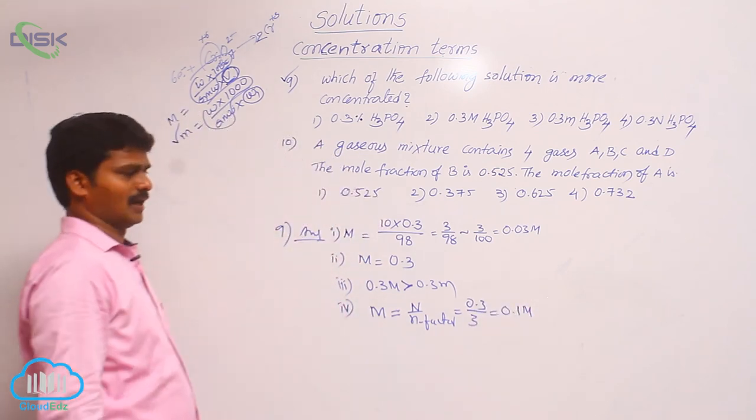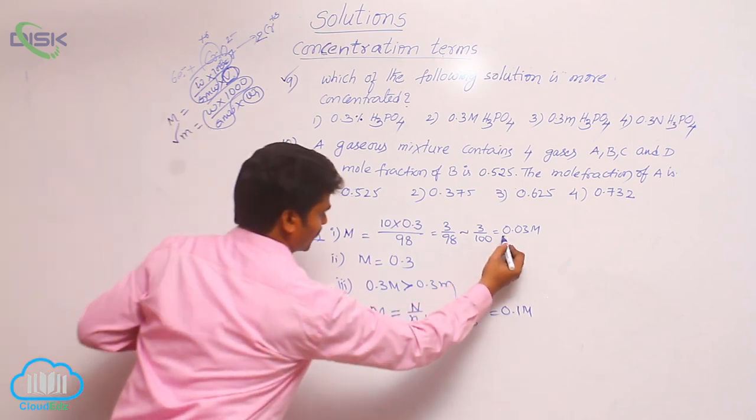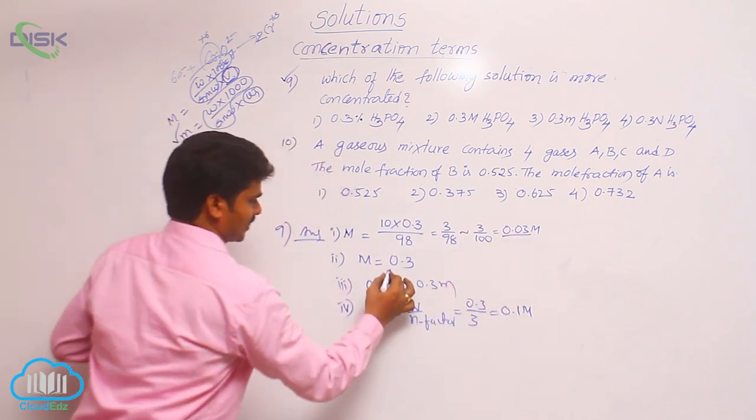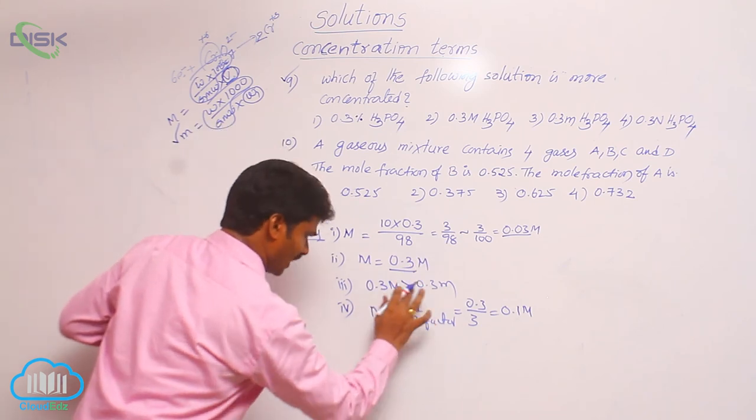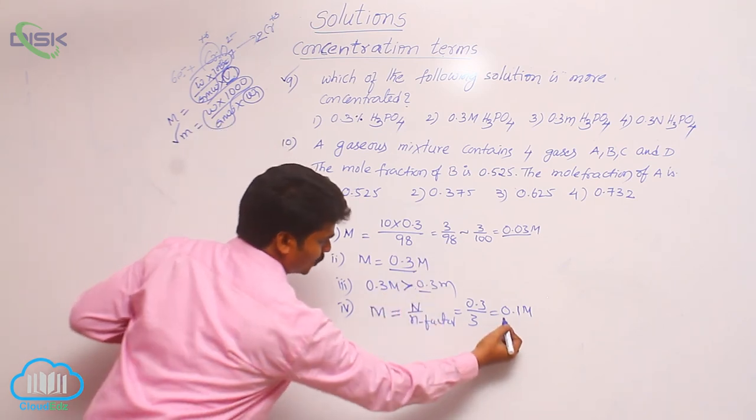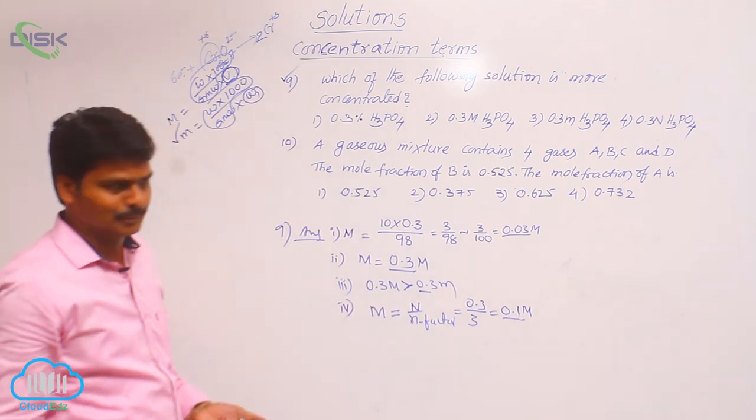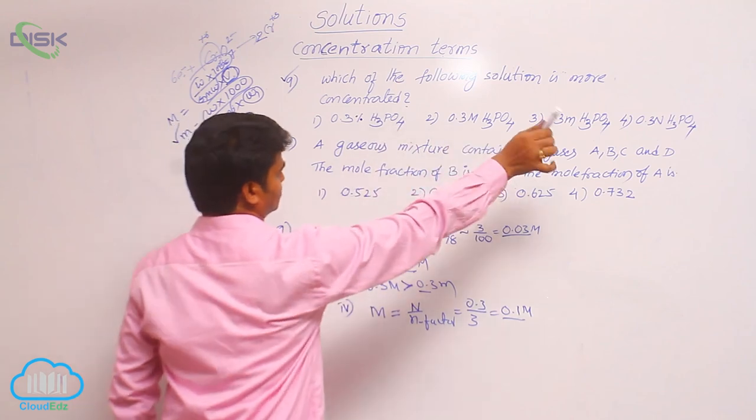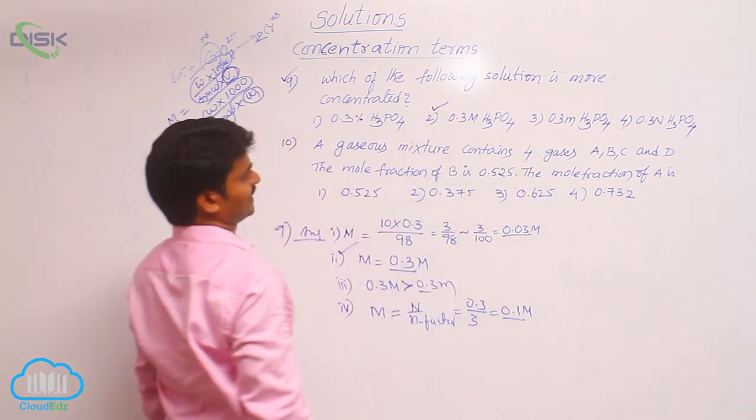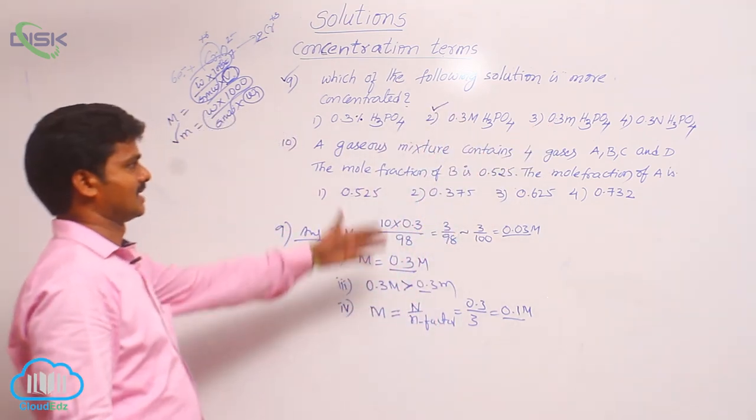So among the four options, first one is 0.03, second one is 0.3 molar, third one is less than 0.3 molar, fourth one is 0.1 molar. Which is having more value? Second option. So among the four terms, the second option has the highest concentration.